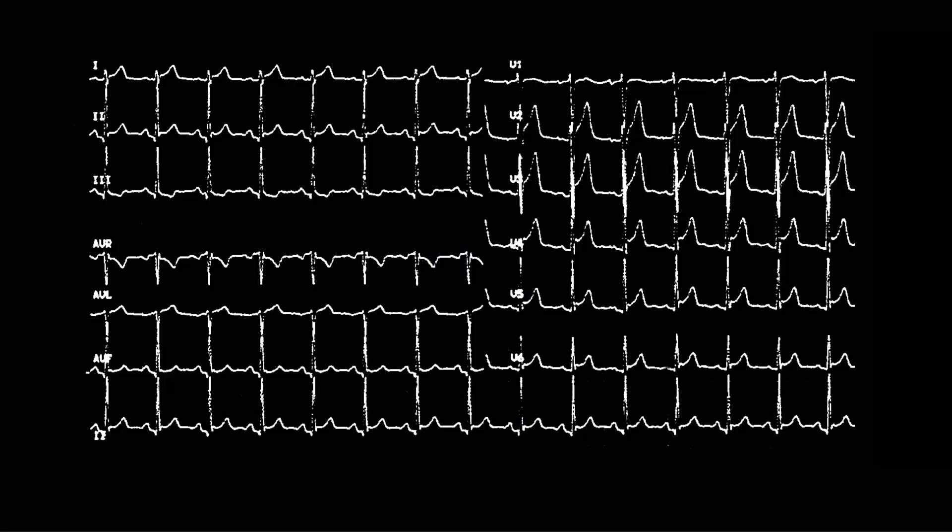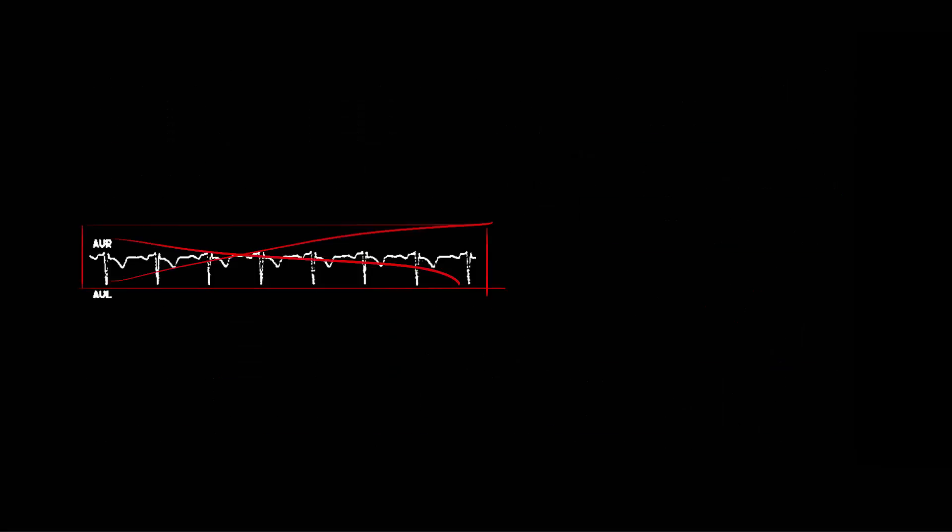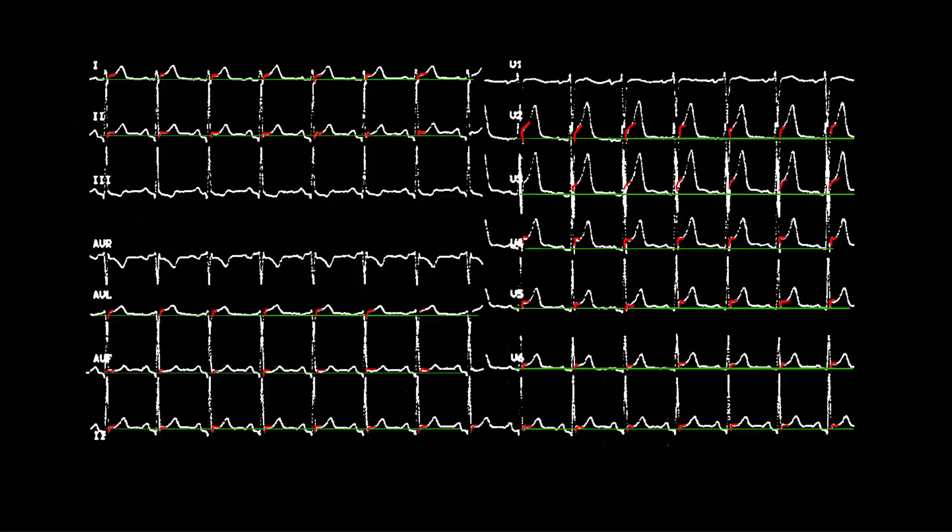The most characteristic finding of pericarditis though is widespread ST segment elevation in all of your leads. Except AVR, because that's the upside down one. Although this finding is only present in just over half of acute pericarditis cases, so don't feel safe just because the ECG looks good.